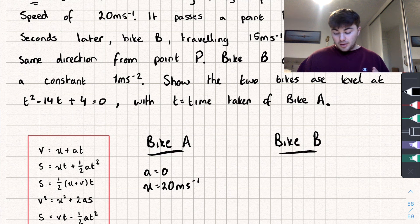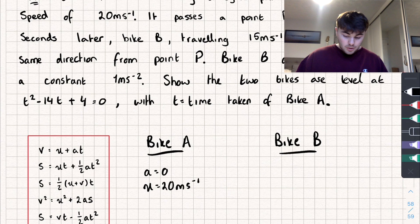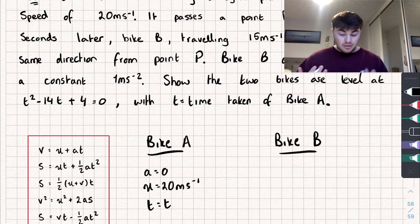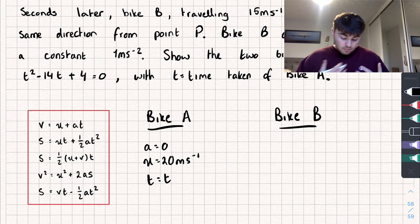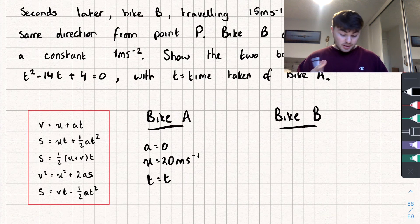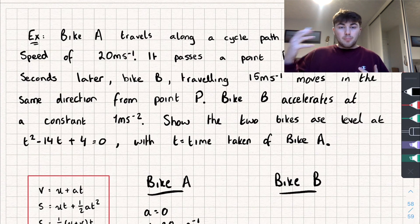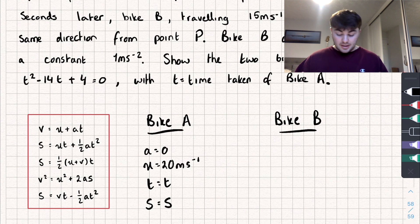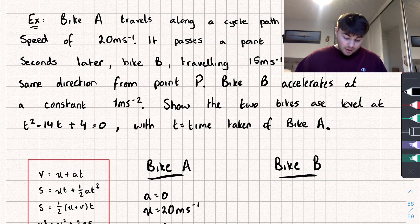Since we want an equation in terms of t, I'll leave t as t rather than assigning a value — I don't have any value for t at this point. I'm not interested in final velocity. For displacement I'll call it s, because I want to find the point where the displacement of Bike A equals that of Bike B, so I'll set s = s for both.